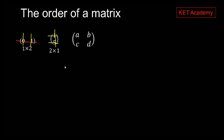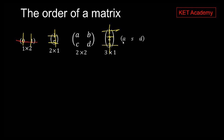A square matrix has an equal number of rows and columns, so a two-by-two matrix is square. If there are three rows and one column, it's a three-by-one matrix. I'd like you to pause the video and give the order of the next matrix before playing. The answer is a one-by-three matrix. Another example gives a three-by-two matrix. That is it for the order of the matrix.